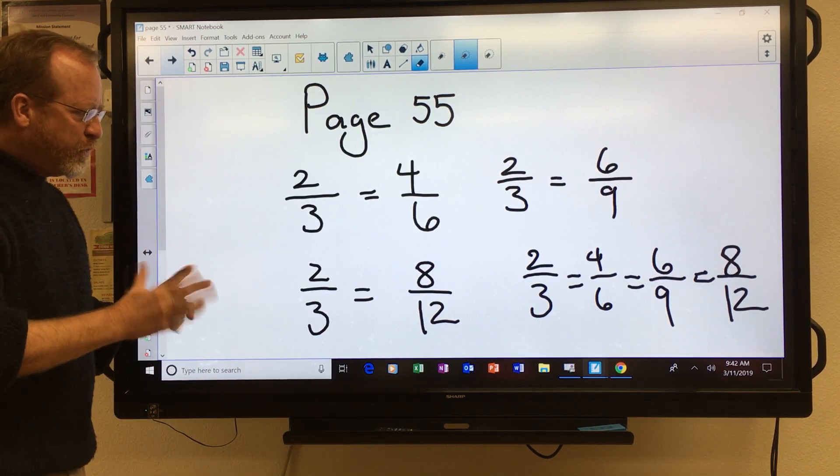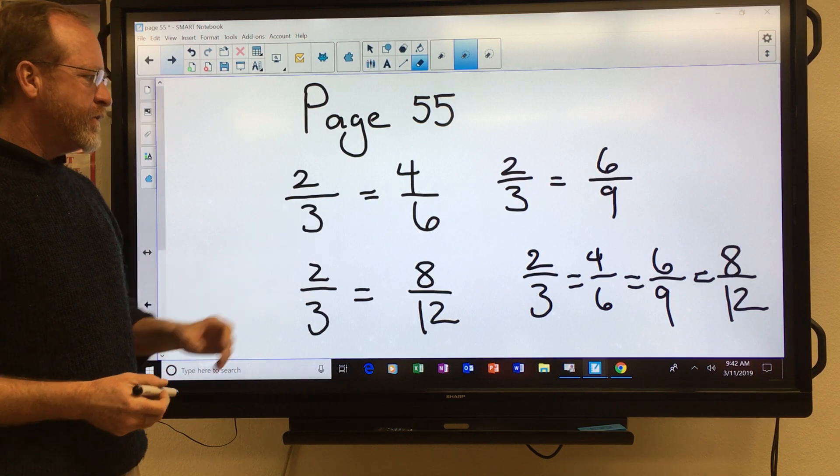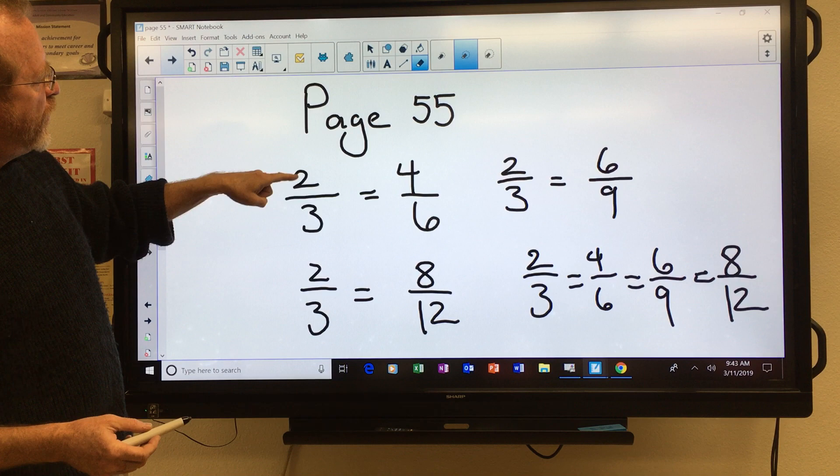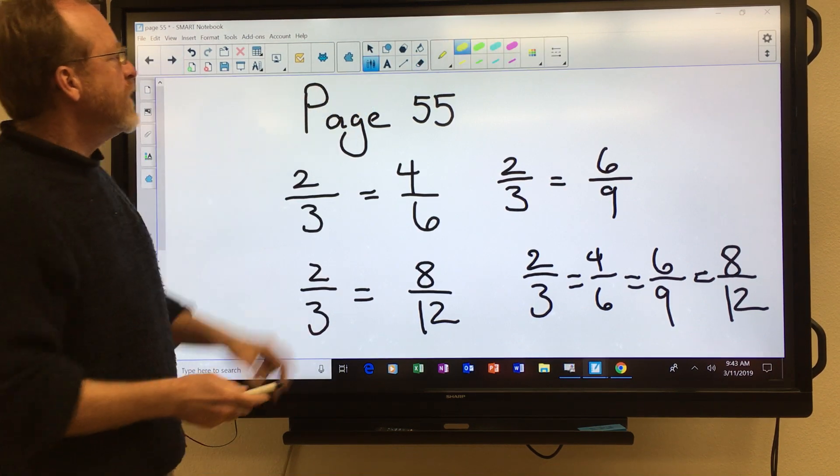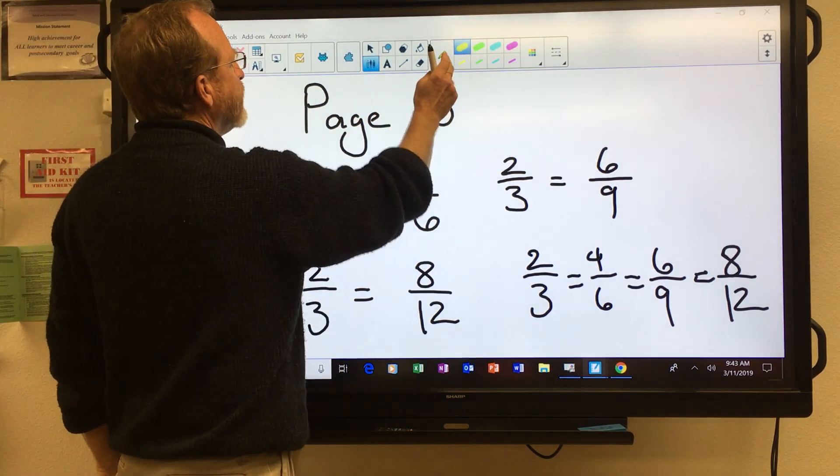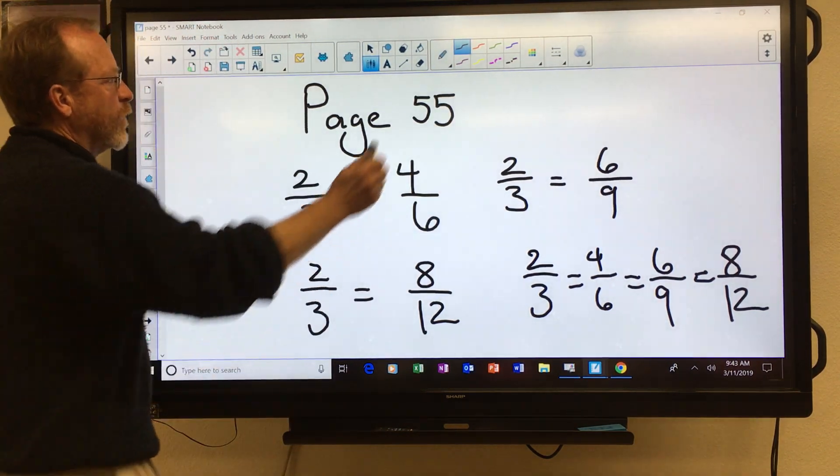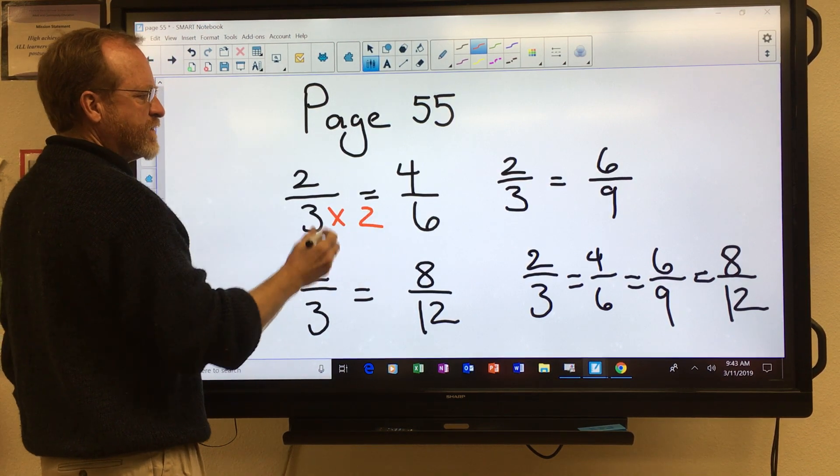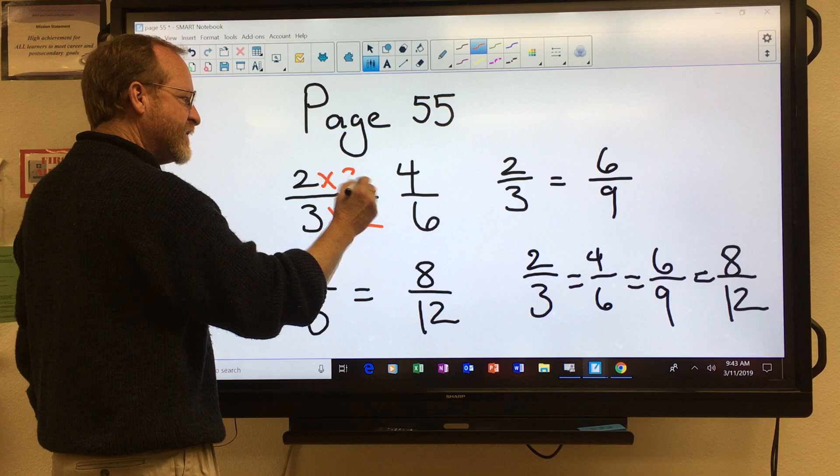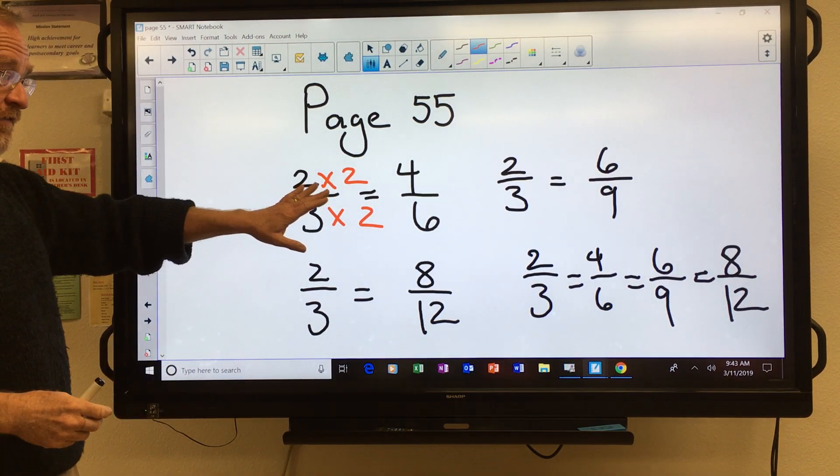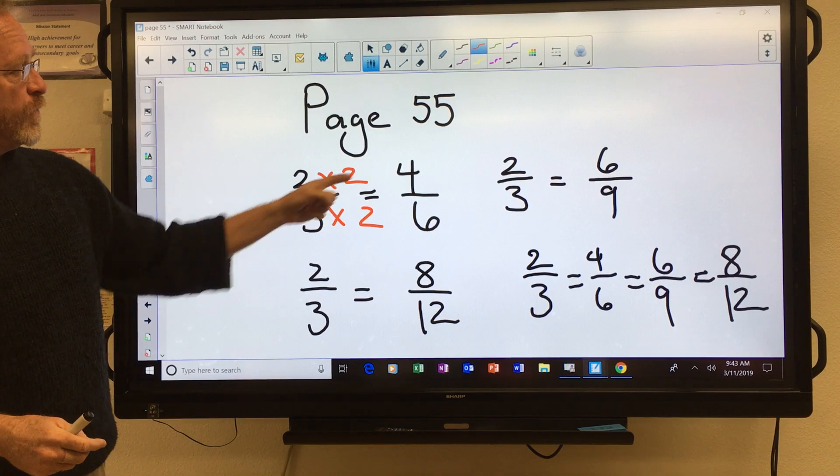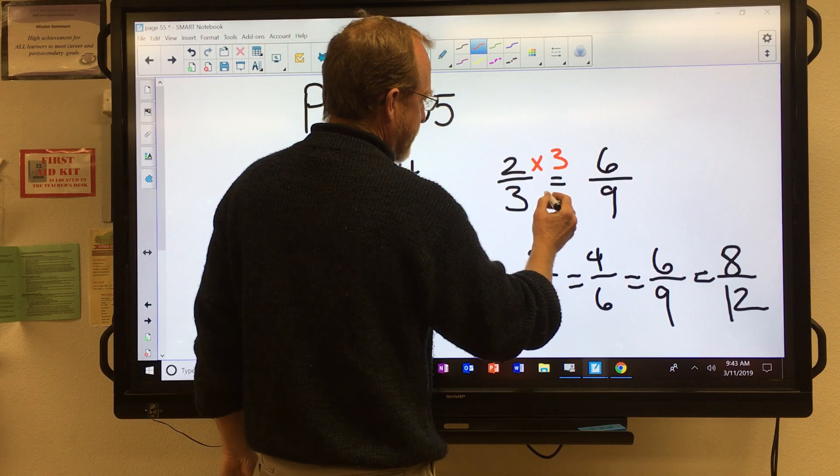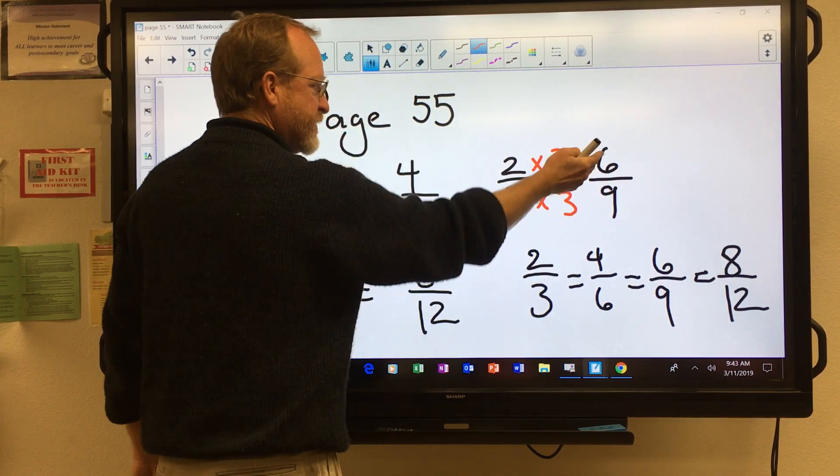Now to do this with just the numbers, there's a couple things you can do. One thing is, is that you can multiply both the denominator and the numerator, as long as you multiply it by the same number, and that's going to give you an equivalent fraction. Watch. So if I take three and multiply it by two, that will give me six. As long as I do it to the top as well, that's perfectly fine. And so two thirds will give me four sixths. And you can see if I multiply this by three and this by three, look what happens. Six over nine.